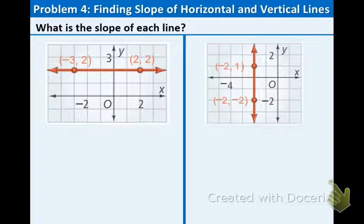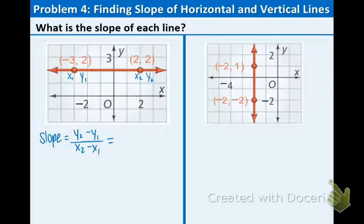Now we're given more graphs, but this time we have horizontal and vertical lines. Let's label our points: (-3, 2) as x1, y1, and (2, 2) as x2, y2. Using the same slope formula, we substitute: (2 - 2) over (2 - (-3)), which is 0 over 5. What happens when we do 0 divided by 5? We get 0. So the slope of a horizontal line is always 0.